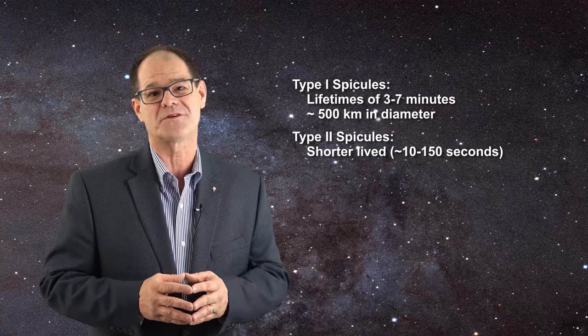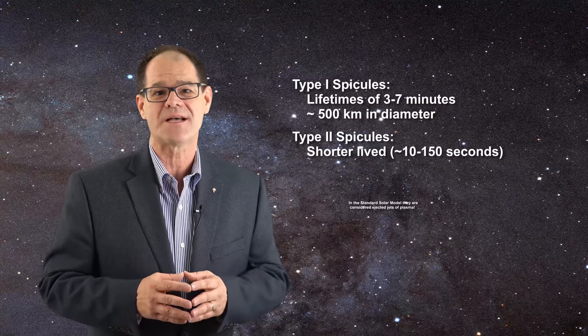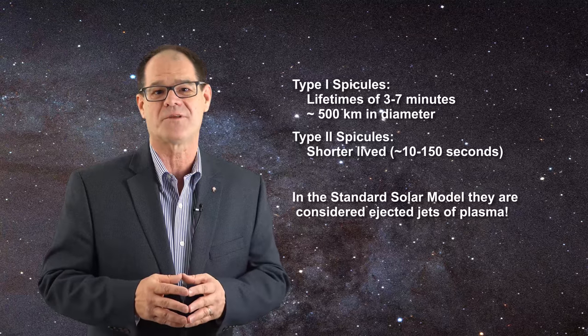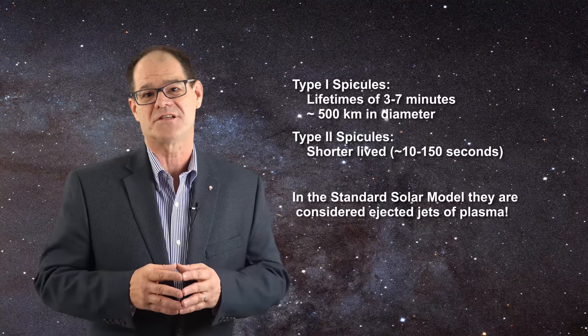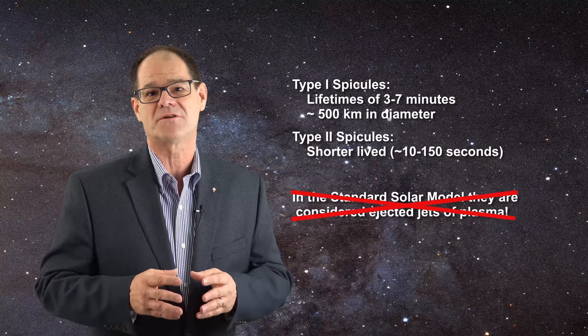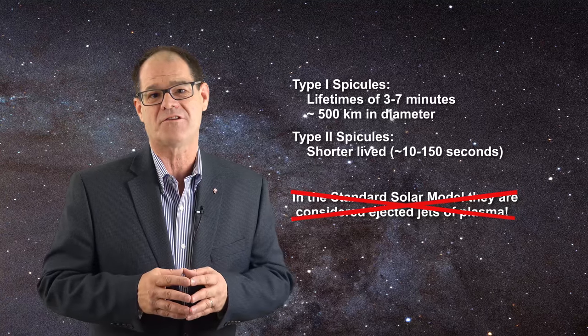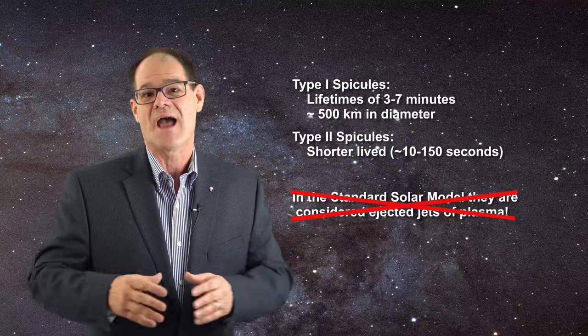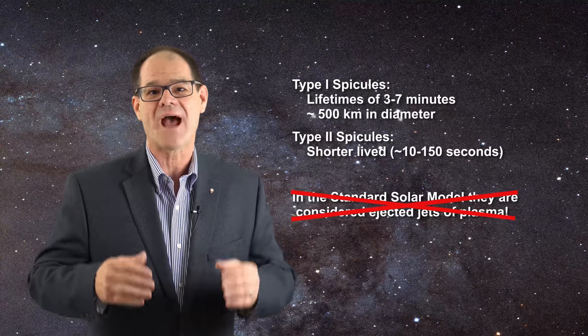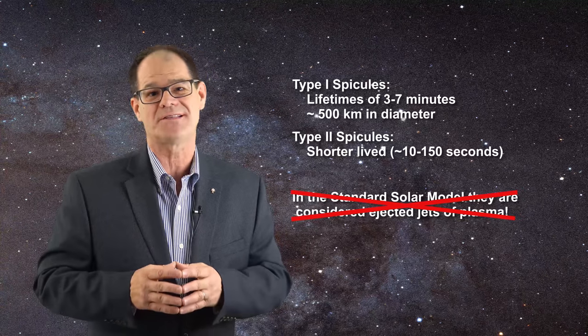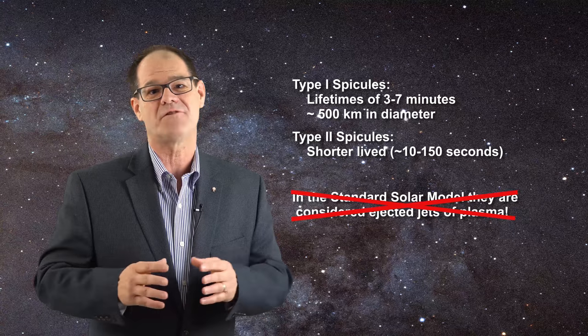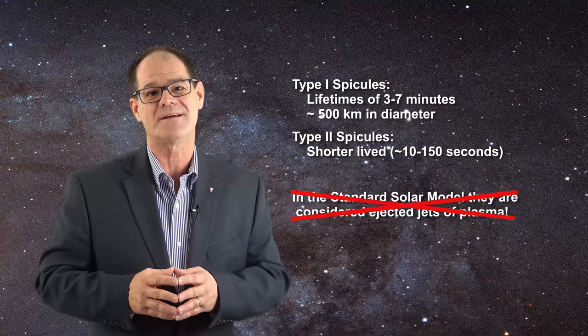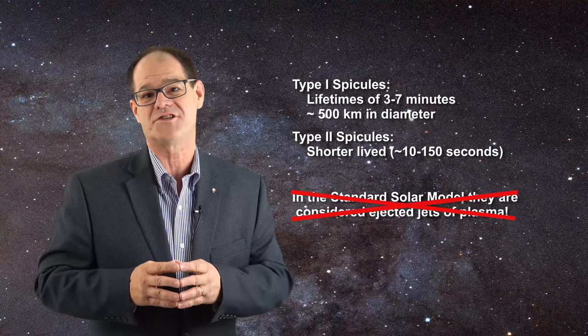In the standard model, spicules are considered like jets of plasma which are being ejected from the Sun. The proposition is not reasonable as spicules are multi-directional in nature. They can rise to great heights, split in two, and their speed of formation can actually increase with increasing height. Such behavior is not consistent with the idea that they are being formed from ejection processes.